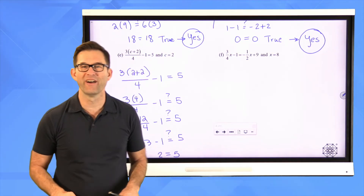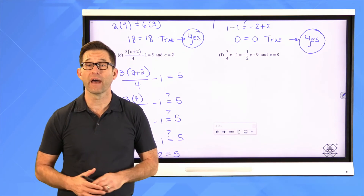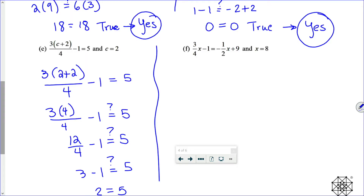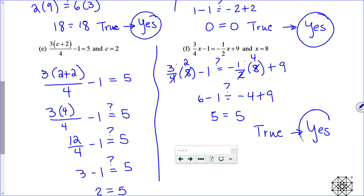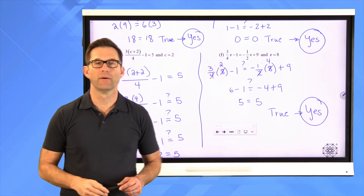For letter F with x equals 8, involving fractions: three-fourths times 8 minus 1 equals negative one-half times 8 plus 9. Multiplying by a fraction means dividing by the denominator and multiplying by the numerator. 8 divided by 4 is 2, times 3 is 6. 8 divided by 2 is 4, times negative 1 is negative 4. So 6 minus 1 equals 5 and negative 4 plus 9 equals 5 — that is true. It is a solution.